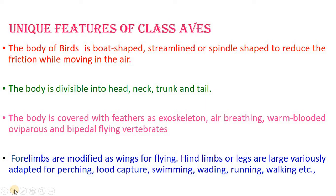The body of birds is boat-shaped, streamlined, or spindle-shaped to reduce friction while moving in the air. The anterior and posterior ends are pointed while the center is broad — that is the meaning of boat-shaped or streamlined. The body is divisible into four distinct regions: head, neck, trunk, and tail. The body is covered with feathers as exoskeleton.